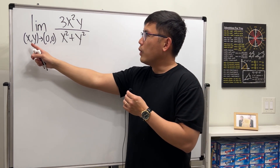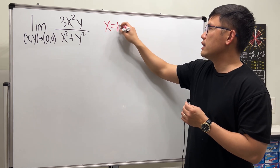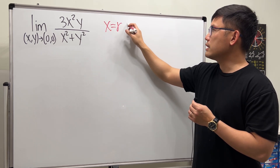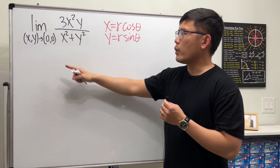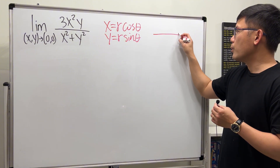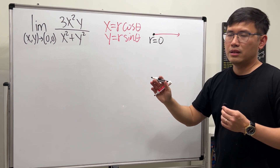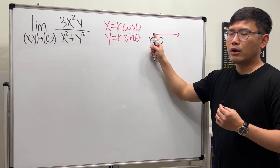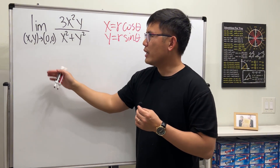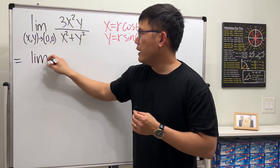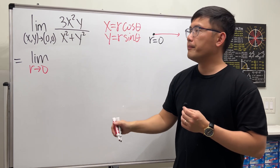Whenever we have (x, y) approaching the origin, we can try to use polar coordinates. The standard conversion is x = r·cosθ and y = r·sinθ. This works wonderfully because in polar coordinates, the origin corresponds to r = 0, and θ can be anything. So instead of the limit as (x, y) → (0, 0), we write the limit as r → 0.